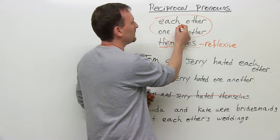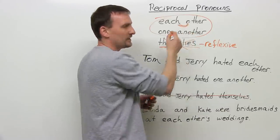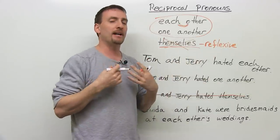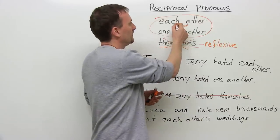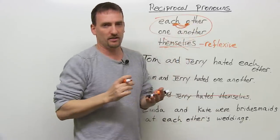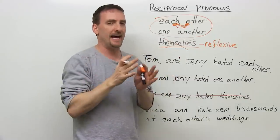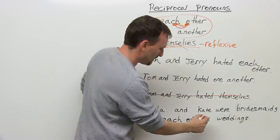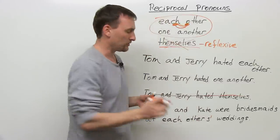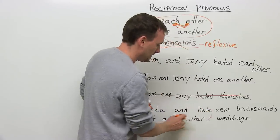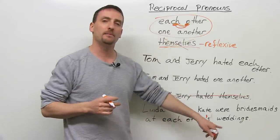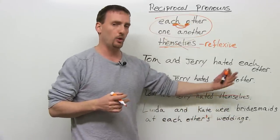Now, some people put these together, especially language learners who are a little new to the language. A native speaker will take the "ch" sound with the "o" and blend them — "each other" — but they are two separate words, you can't mix them. And some people also think you can put the apostrophe after the s — this is not the case, because we're talking about one person to one person, so the apostrophe always comes before the s to show possession.